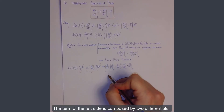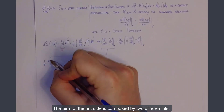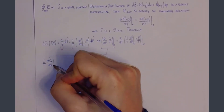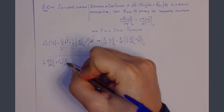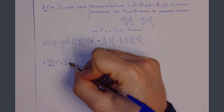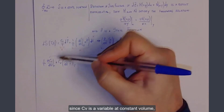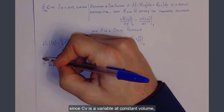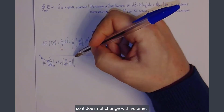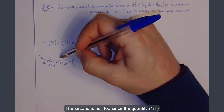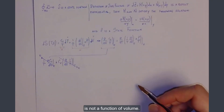The term on the left side is composed of two differentials. The first is null, since Cv is a variable at constant volume, so it does not change with volume. The second is also null, since the quantity 1 over T is not a function of volume.